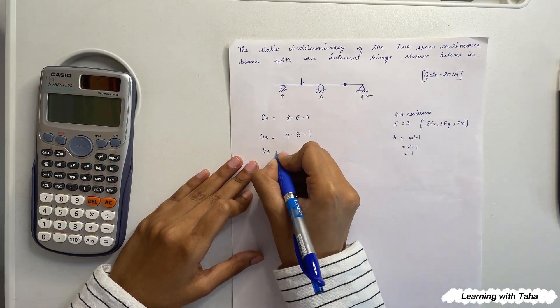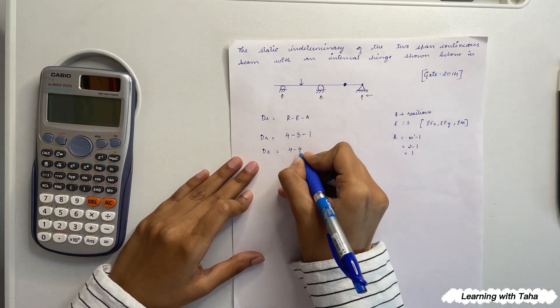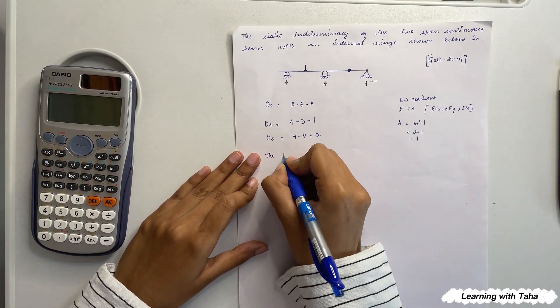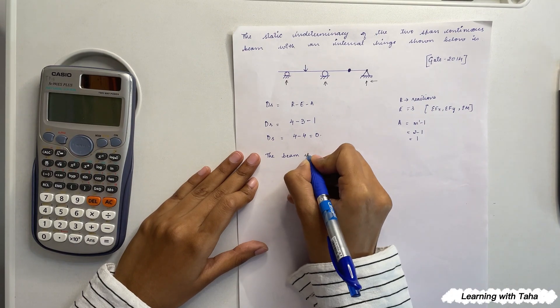So here DS is equals to four minus three minus one, which is equals to zero. So this means that the beam is statically determined.